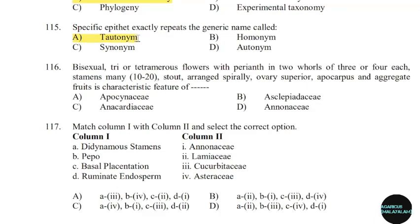116th question: Bisexual tri- or tetramerous flowers with perianth in two whorls of three or four each; stamens many, stout, arranged spirally; ovary superior, apocarpous; and aggregate fruit is a characteristic feature of which family? Correct answer: Option D.